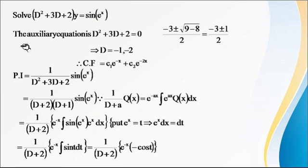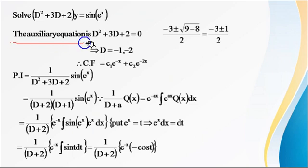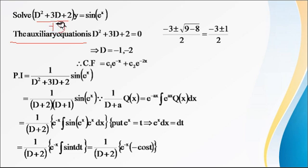Now solve: (D squared plus 3D plus 2) of y equal to sin(e raised to x). First we write the auxiliary equation by equating f(D) to zero. Here f(D) is D squared plus 3D plus 2, so D squared plus 3D plus 2 equal to 0.